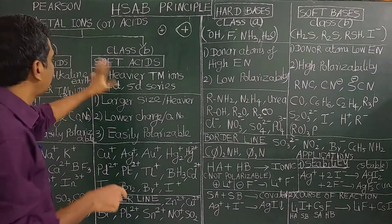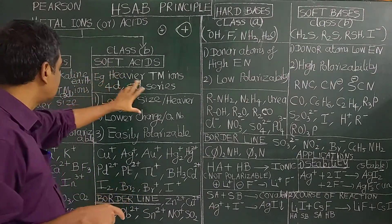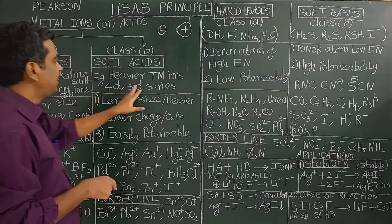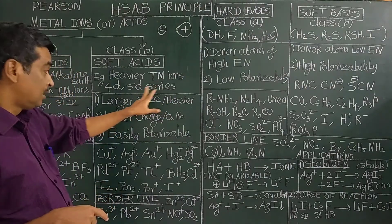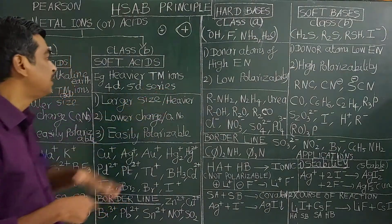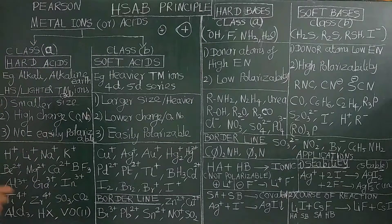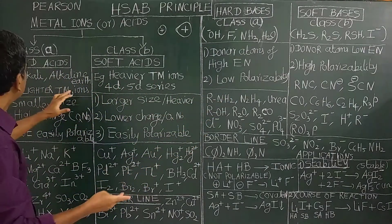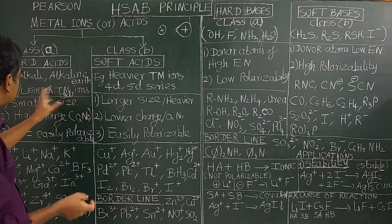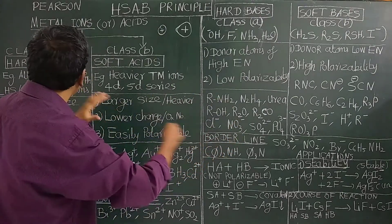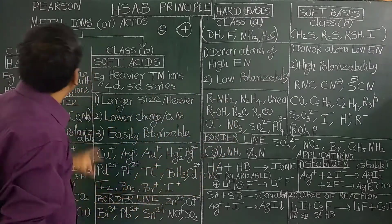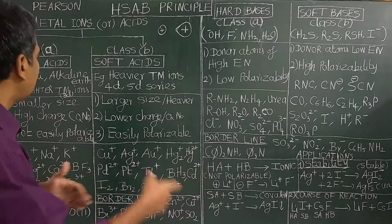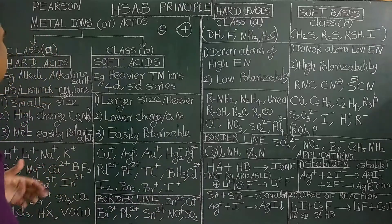The opposite applies to heavier transition metal ions. For example, 4D and 5D series transition metal ions, and those on the right-hand side of the 3D transition metal series, are not hard acids.